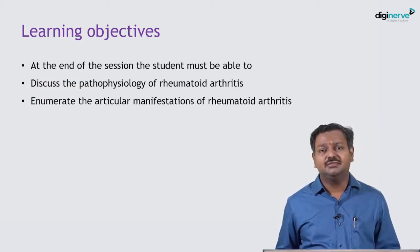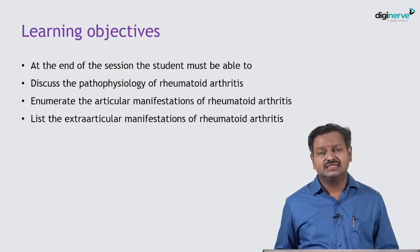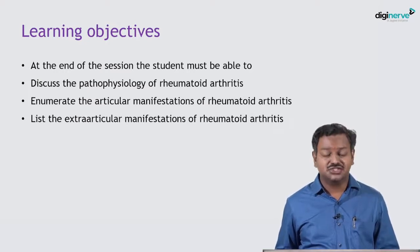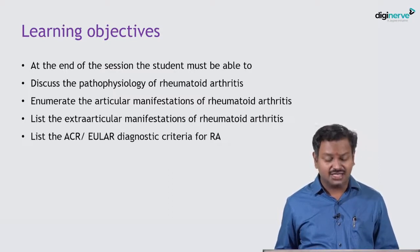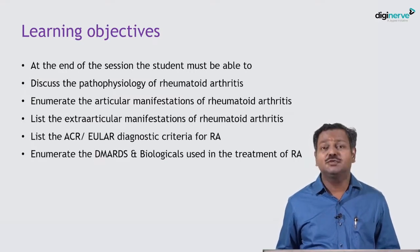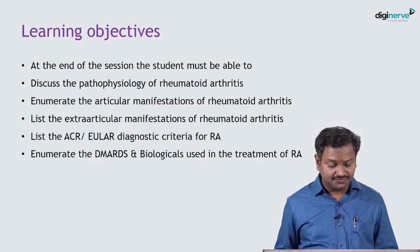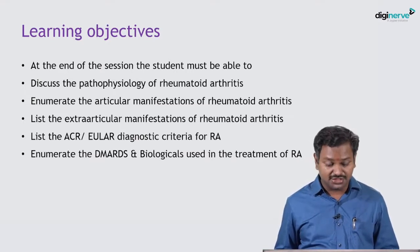Students should be able to enumerate the articular manifestations of rheumatoid arthritis, list the extra-articular manifestations, enumerate the ACR/EULAR criteria for diagnosis of rheumatoid arthritis, and enumerate the treatment options including disease-modifying agents and biologicals available for treatment. Let's begin the session with a case scenario.